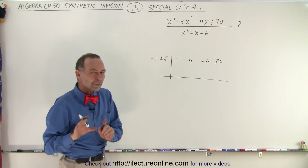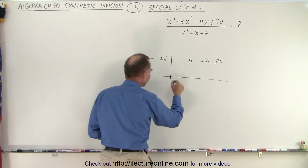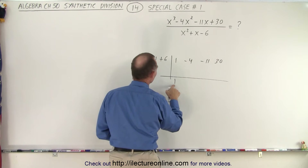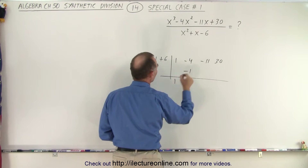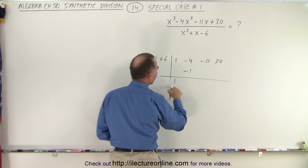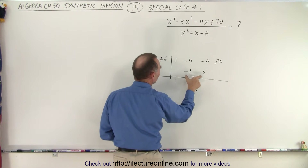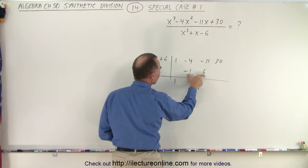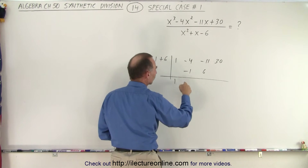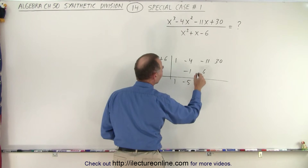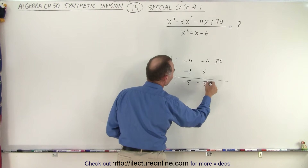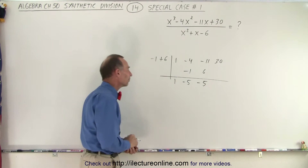Everything else is about the same. We drop down the first number, we multiply negative 1 times 1 and we get negative 1. Then we take 6 times 1 and we get plus 6. Notice we'll take two of these at a time, instead of just one. We add those two together, we get minus 5, and we add those two together, we get minus 5 as well. Minus 5 both times.